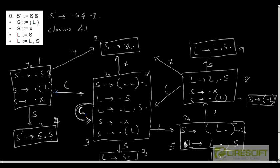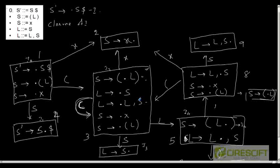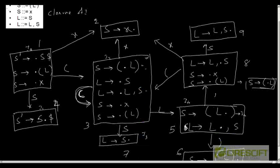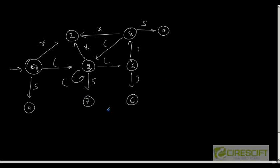We start with the initial item of the starting production and create closure of I. We iteratively take an item from the given state, move the demarcator, and based on that compute a new item and a new state. In this way we created a state transition diagram as shown in this figure.